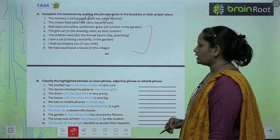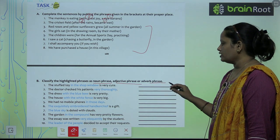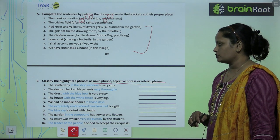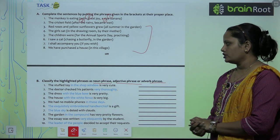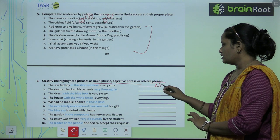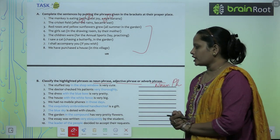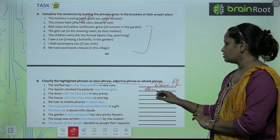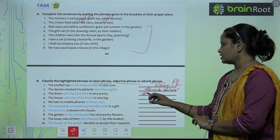Next, Part B: classify the highlighted phrase as noun phrase, adjective phrase, or adverb phrase — aapko batana hai ki noun phrase hai, adjective phrase hai ya phir adverb phrase hai. The stuffed toy in the shop window is very cute — 'in the shop window' is an adjective phrase. The doctor checked this patient very thoroughly — this is an adverb phrase. The dress with the blue bow is very pretty — this is an adjective phrase.